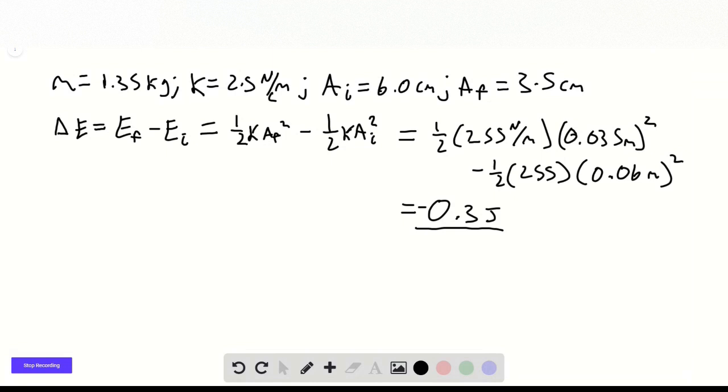And this change comes due to a loss of energy to the environment. So this could be air resistance, which is a type of friction itself.